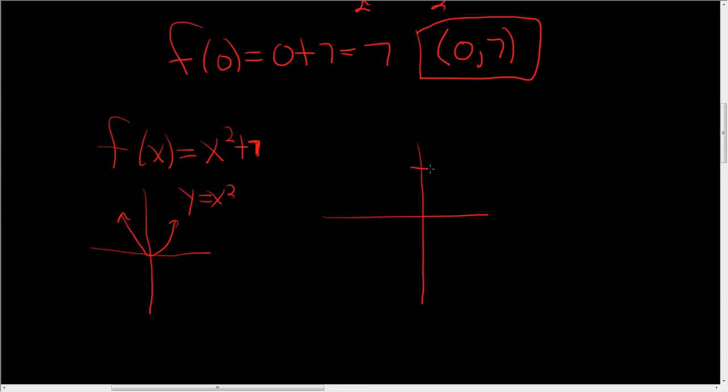So we're here at seven. And this here would be f of x equals x squared plus seven. From the picture, you can see that you have a horizontal tangent line at the point zero comma seven. That's how you do it without calculus.